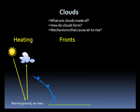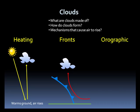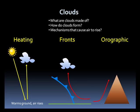Second is by frontal forcing. Fronts work to push air upward. This upward motion can condense water vapor out of the air, leading to clouds. Third is by orographic means. As air hits an object like a mountain, it can be forced upward. Again, moisture would condense out of the air, leading to cloud formation.